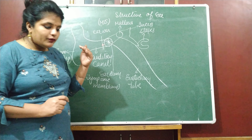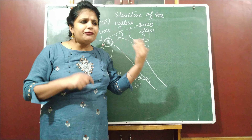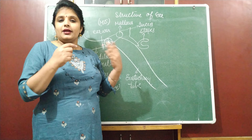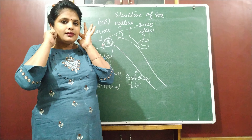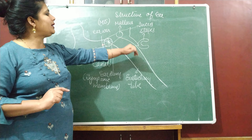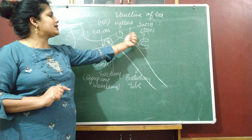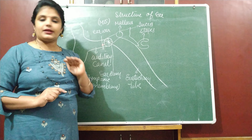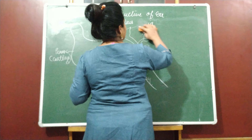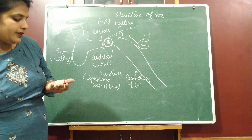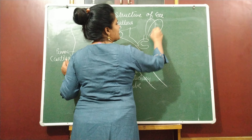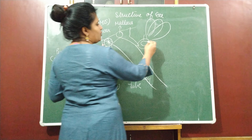What is the tympanic membrane, or what is tympanum? The size of the tympanic membrane is about the diameter of a pencil. When we have a hole in the tympanic membrane, we have to go for a minor surgery that is called tympanoplasty, in which we do grafting.